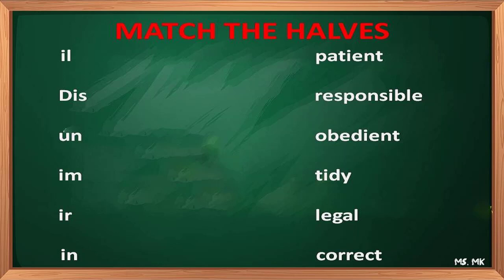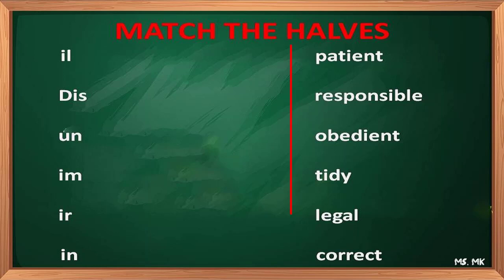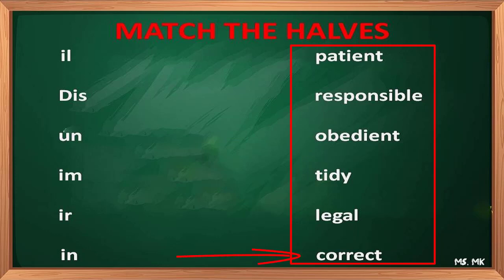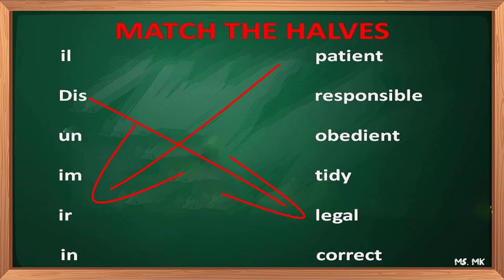Let's start our lesson with a matching activity. On the left you have: ill, dis, an, im, un, and in. On the right you have: patient, responsible, obedient, tidy, legal, and correct. You just have to match these two parts according to your understanding, and we are going to correct in a few seconds.